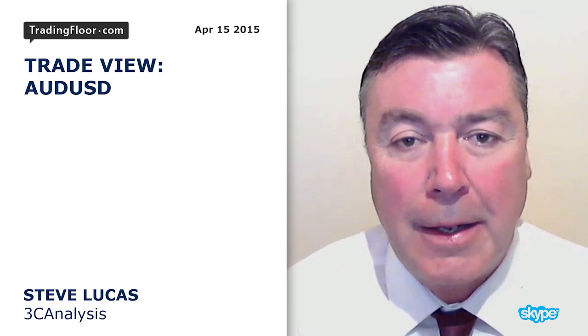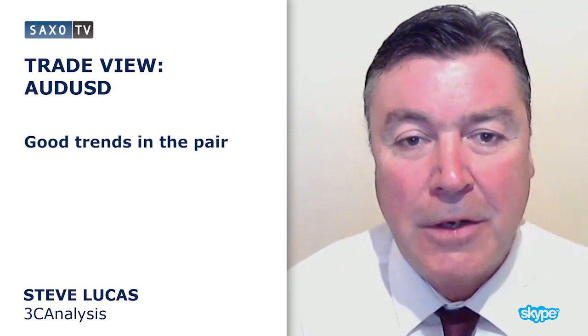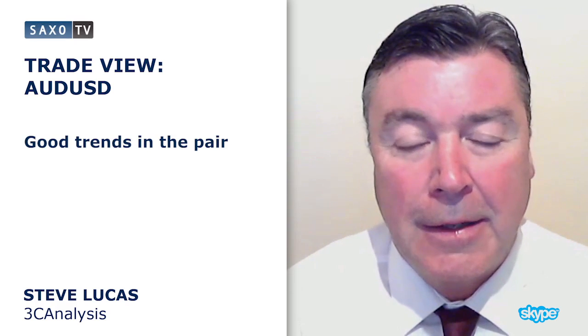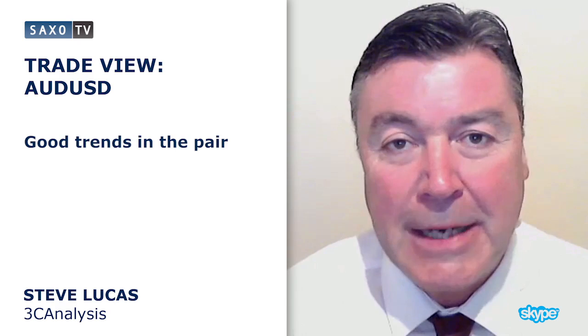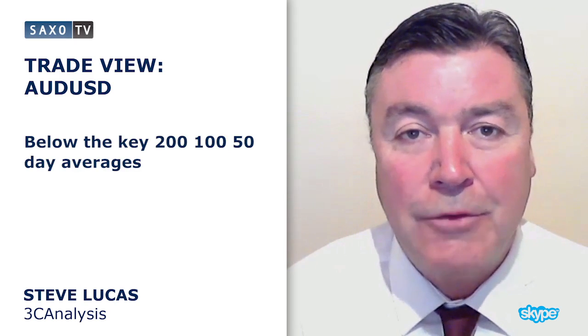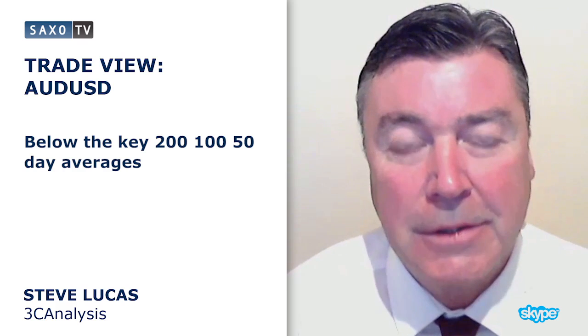Today I'm going to focus on the Aussie dollar. We've got some good trends going on the Aussie, and those trends have been there for some time — lower weekly and daily highs more recently. We're trading below the key 200 and 150-day averages, as well as the 100 and 200 hourly averages.